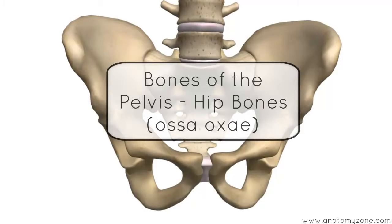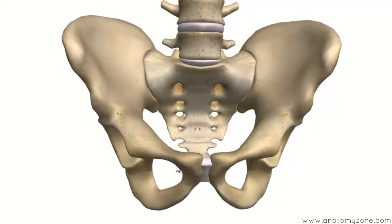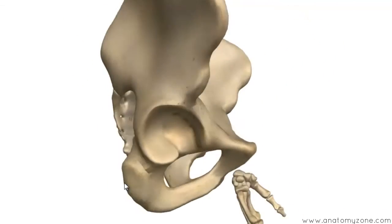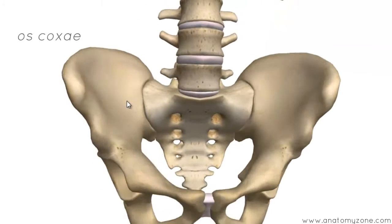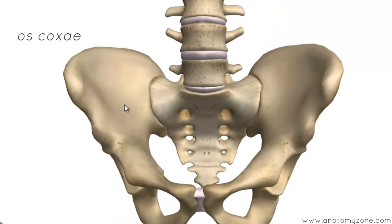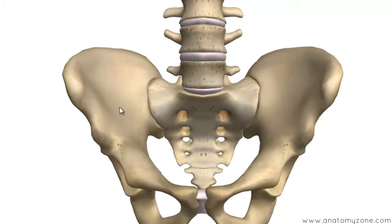This is a tutorial on the bones of the pelvis. You've got a few bones that make up the pelvic skeleton: these two large hip bones on either side, a sacrum, and a coccyx. These two hip bones are called the os coxae — from Latin, where 'os' means bone and 'coxae' means of the hip. So you've got two hip bones, a sacrum, and a coccyx.